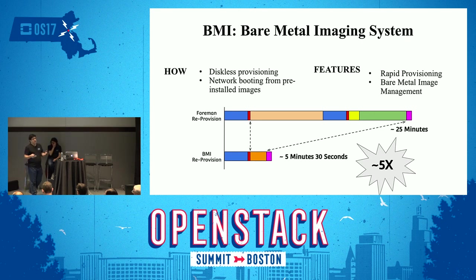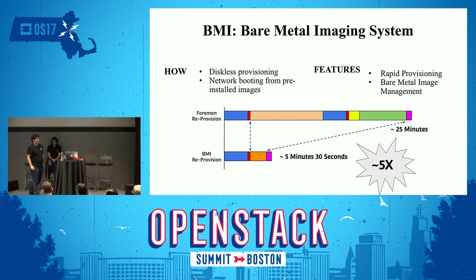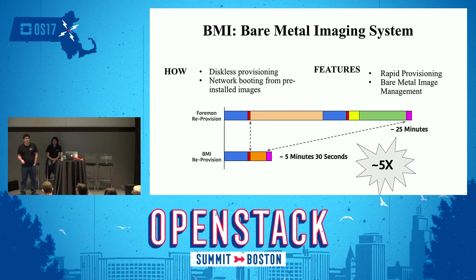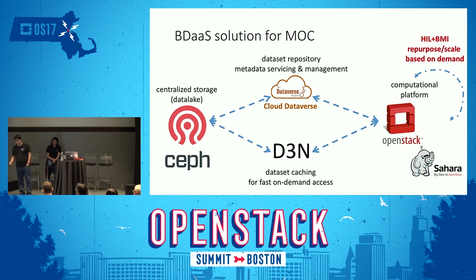With BMI, we can take an environment, use it, and give it back in the state we found it — which is very beneficial to our collaborators. BMI significantly reduces reprovisioning time: a standard provisioning tool like Foreman requires around 25 minutes, while with BMI we can provision an environment in under six minutes. Our repurposing scaling solution is based on a combination of HIL and BMI.